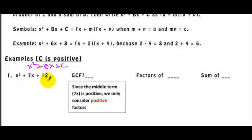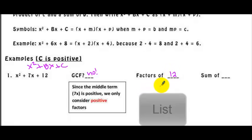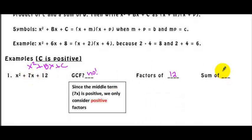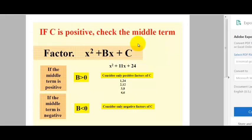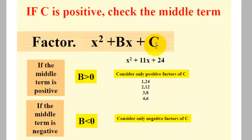For our first example, the first step is to check if you have a GCF — in this case there's no GCF. Now let's find the factors of 12, and from all the factors of 12, we need two that give a sum equal to the middle term, which is 7. The factors we consider will be both positives, because whenever the middle term is positive, we consider only positive factors of c.